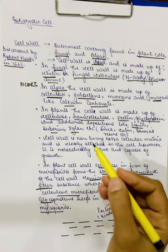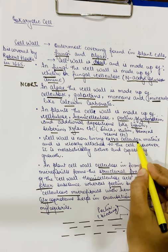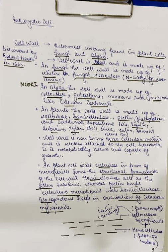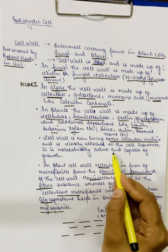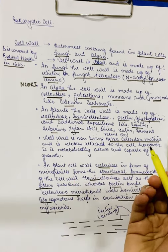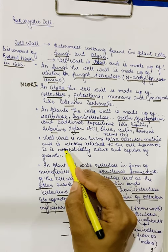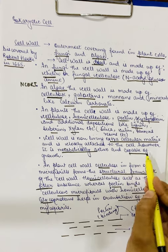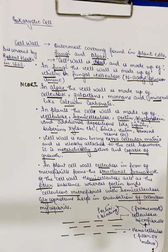The cell wall is a non-living extracellular matrix — the matrix outside the cell — and it is secreted by the cell itself. Though it is the dead part of the cell, it is closely attached to the cell and is metabolically active. It is capable of growth, so the cell wall can have multiple layers — we will be studying now how this growth takes place and how many layers the cell wall has.